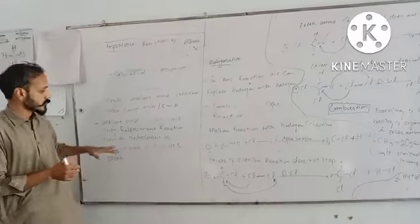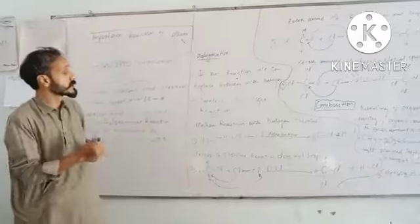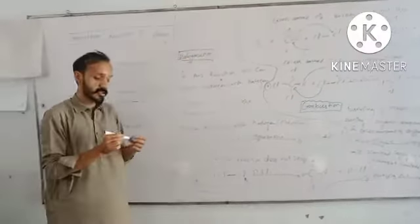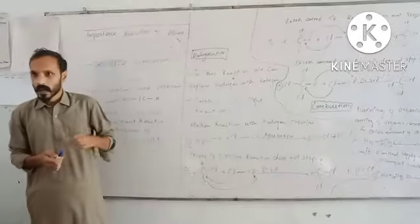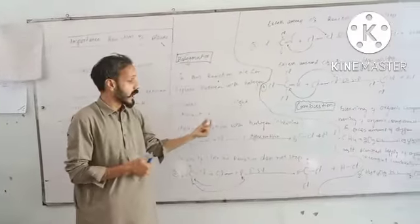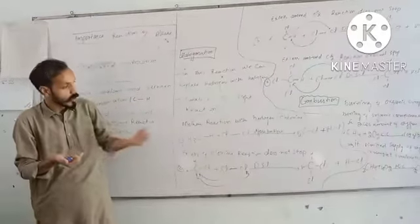This is the replacement reaction. The replacement reaction is from group number 7, the halogens. This is the replacement reaction from the group of halogens.